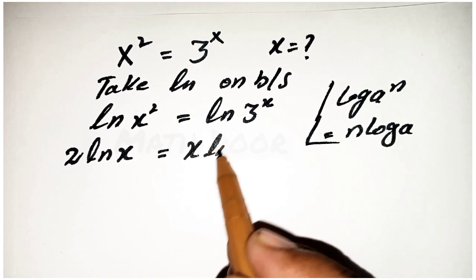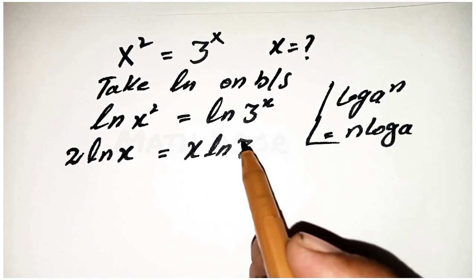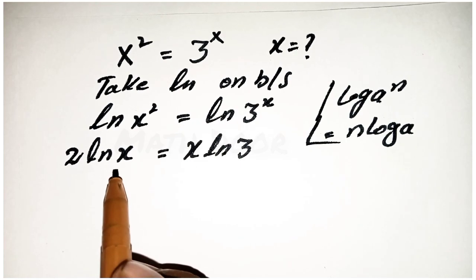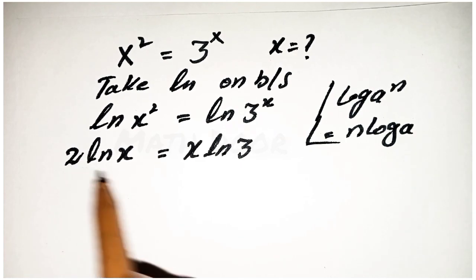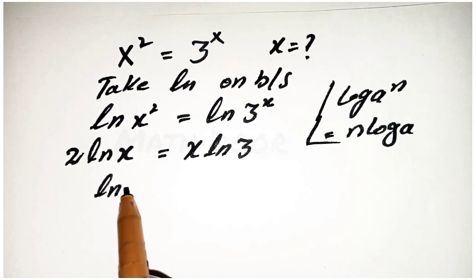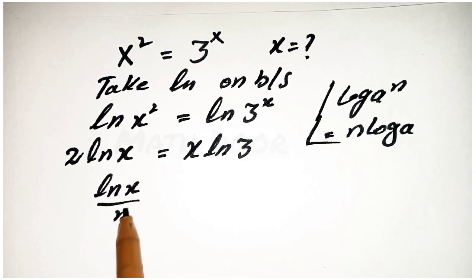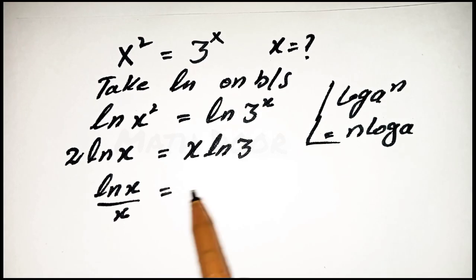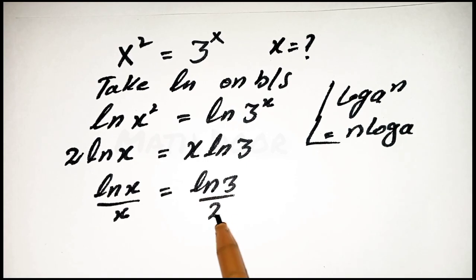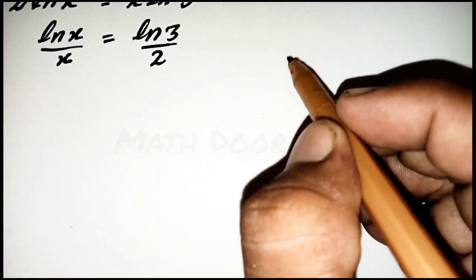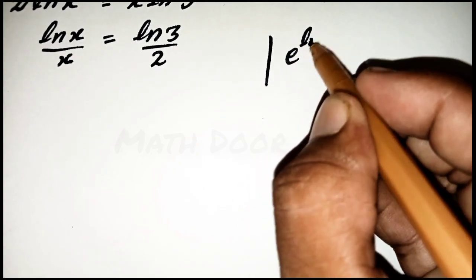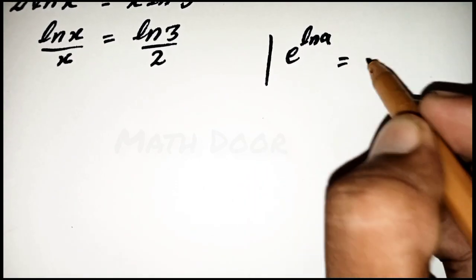Applying this rule, we write 2·ln(x) = x·ln(3). Taking x to the left side and 2 to the right side, we write the equation as ln(x)/x = ln(3)/2.